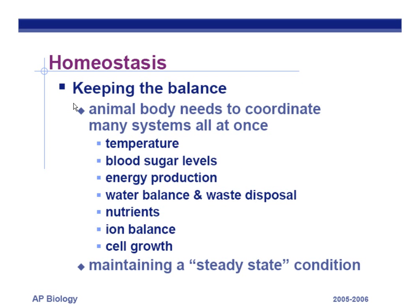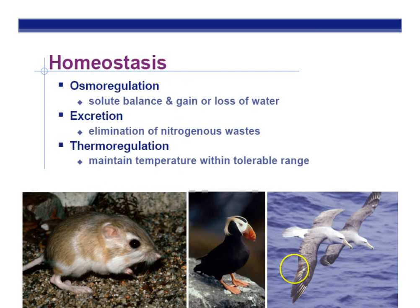Here are some things we have to keep in balance: temperature, blood sugar levels, energy production, water balance, nutrients, ion balance, and cell growth — trying to maintain a steady state condition within the cells and the organism. Osmoregulation is the balance of salt and water in order to maintain a water concentration equal to the external environment, so you don't run into problems with osmosis into or out of the body. Excretion involves elimination of nitrogenous waste from protein breakdown. Thermoregulation means maintaining a stable body temperature.